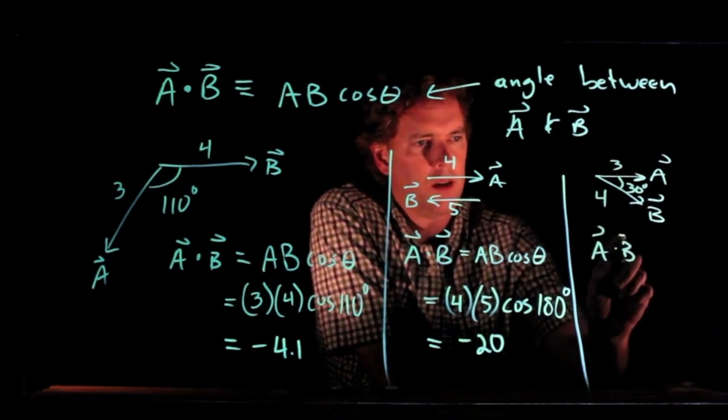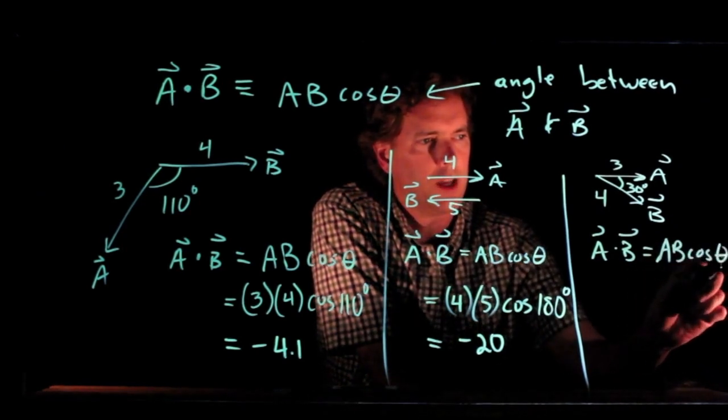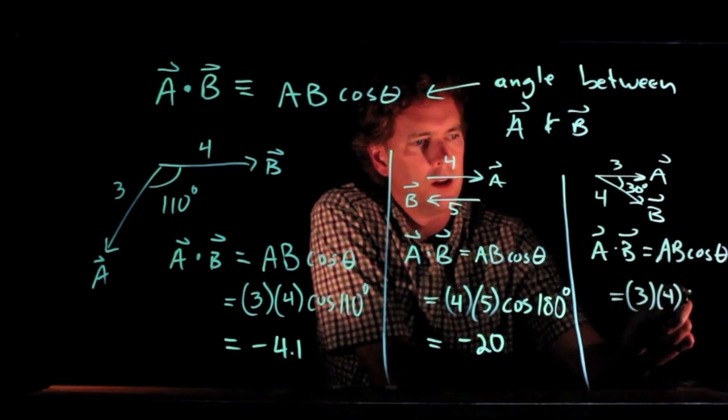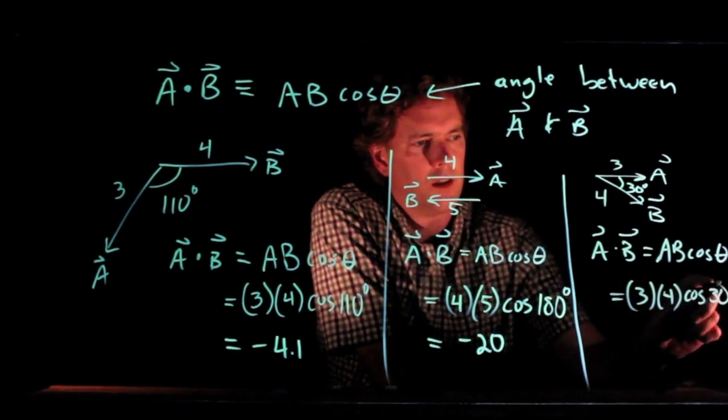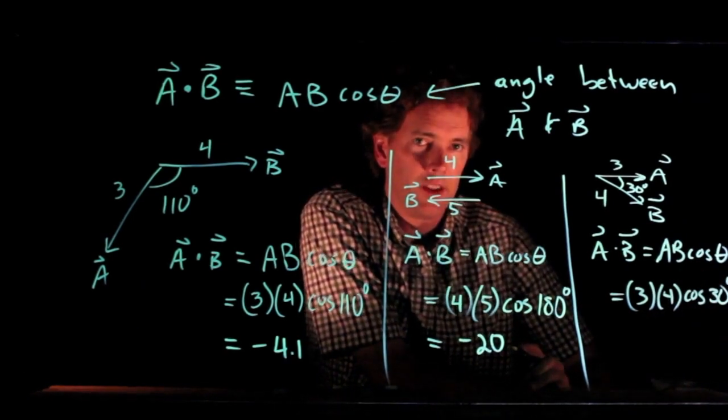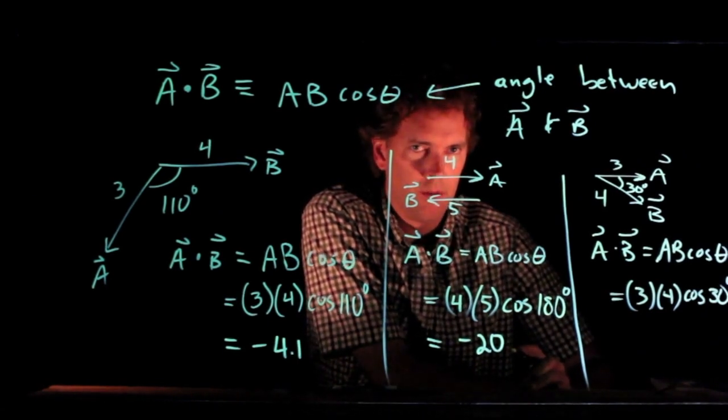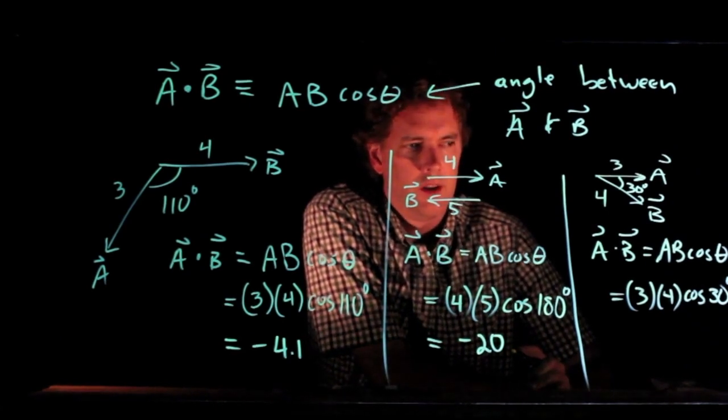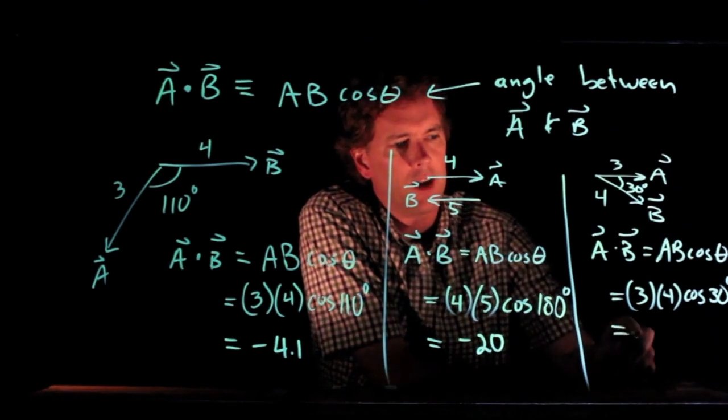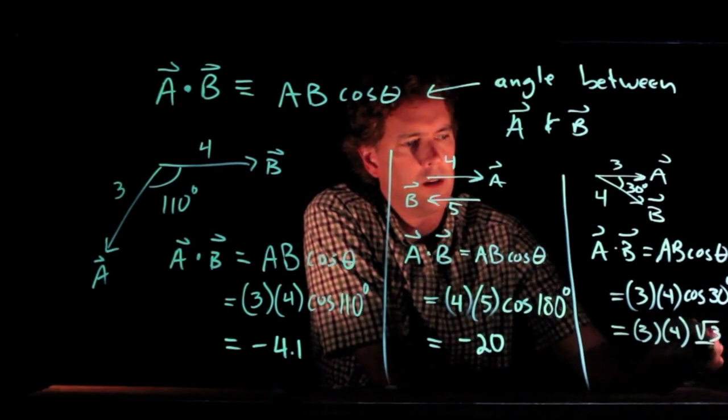A dot B is equal to AB cosine of theta, and so we get 3 times 4 times the cosine of 30 degrees. And you might remember that a 30, 60, 90 triangle is a 1 square root of 3, 2 triangle. So, cosine of 30 degrees is, in fact, square root of 3 over 2.